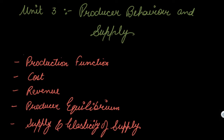Hello everyone, welcome back to the third unit. In this unit we will be starting our third unit, that is Producer Behavior and Supply. Under this, the following topics are covered in your syllabus: the production function, cost, revenue, producer equilibrium, supply, and elasticity of supply.